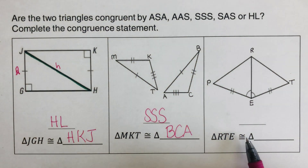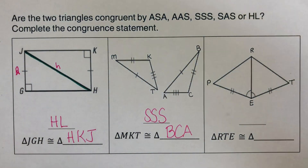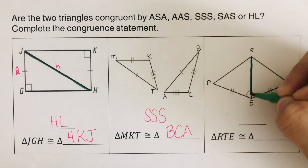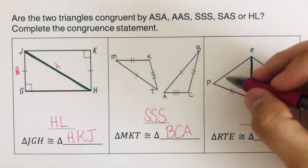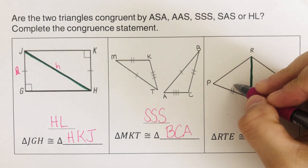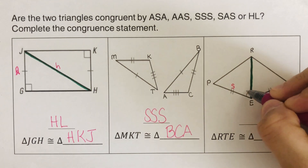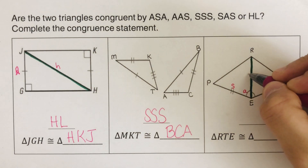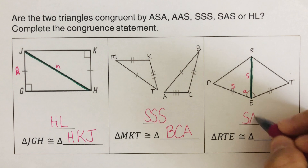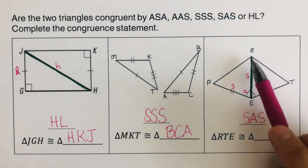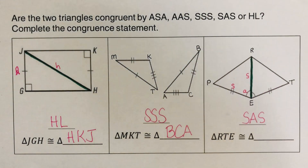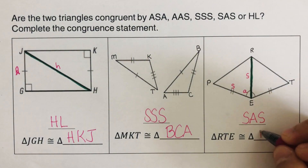We have the last one here. This side is shared by both triangles, so we have a side, an angle, and a side — this is SAS. The triangle goes R, T, E, and the congruent triangle is R, P, E. So triangle RTE is congruent to triangle RPE.